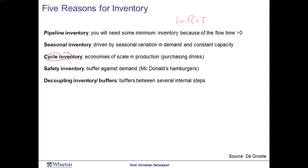The third reason for inventory is called cycle inventory. Oftentimes, as we saw in the McDonald's example, there are economies of scale in production or purchasing. Think about how in your household you purchase beer, wine, milk, or orange juice. You might be drinking a bottle of beer a day, but it's unlikely you'll run to the beer store for every individual bottle — you buy a case, and the other bottles sit in inventory. The fourth reason is safety inventory. McDonald's doesn't want to run out of hamburgers, so they produce burgers ahead of demand, always keeping a little safety stock to make sure customers don't have to wait. Finally, the fifth reason is decoupling inventory. Instead of just buffering from external demand from customers, we might also want to buffer from internal demand from other process steps in the operation.